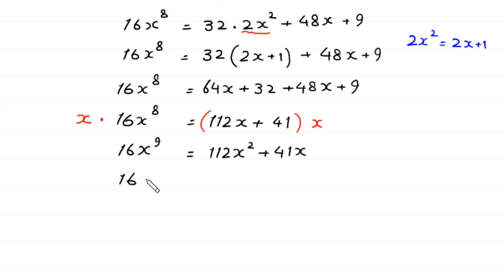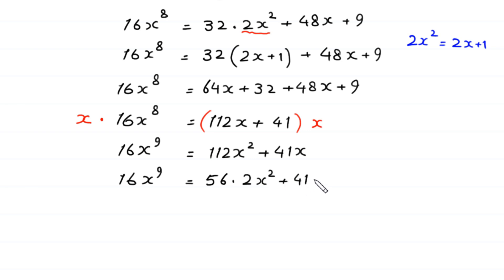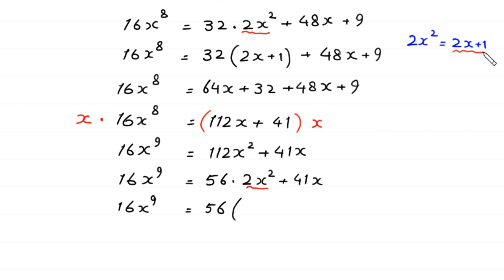Next, 16x to the power 9 equals 112x squared plus 41x. We can write 112x squared as 56 times 2x squared plus 41x. In place of 2x squared we put the value 2x plus 1, giving 16x to the power 9 equals 56 times (2x plus 1) plus 41x.